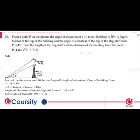This question is from a point P on the ground. The angle of elevation of a 10m tall building is 30 degrees. A flag is also at the top of the building and the angle of elevation of the top of the flag is 45 degrees. The height of the flag is the distance of the building from the point P.